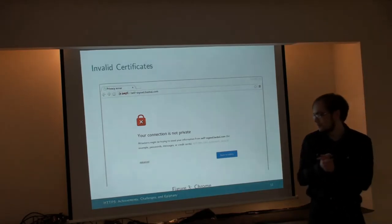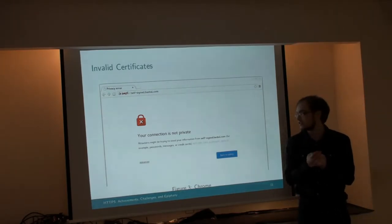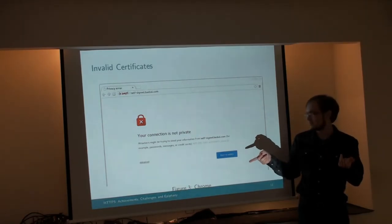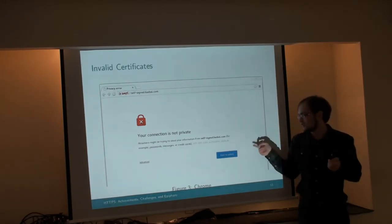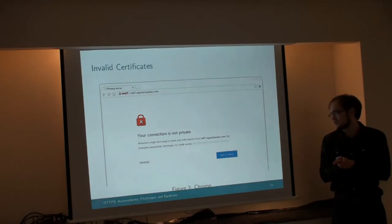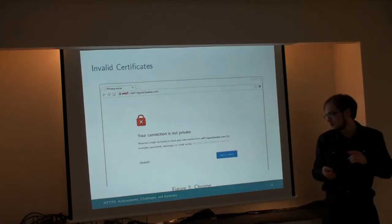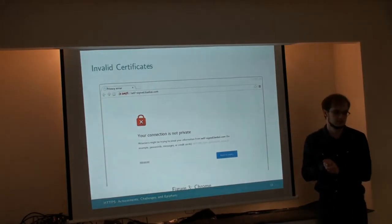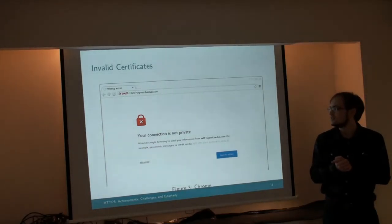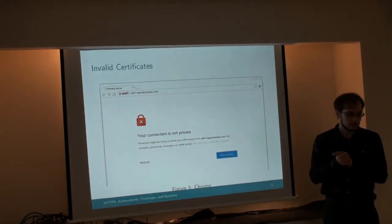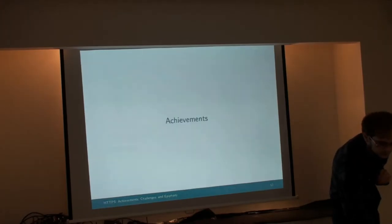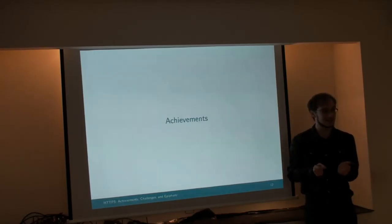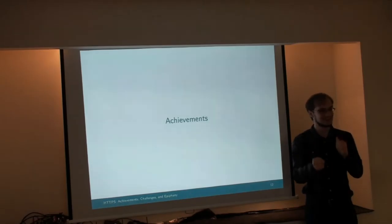When a website has misconfigured its certificate chain — shown here in Chrome, which has the best warning — you get a message saying 'Your connection is not private. Attackers might be trying to steal your information from self-signed.ssl.com.' There's a 'Back to safety' button. If you click the Advanced button you can find a way to ignore the error and proceed. That's the first part of my presentation — I got this far in an hour last time I gave this talk, so I'm glad I sped things up.